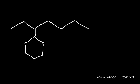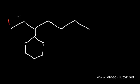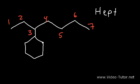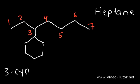Go ahead and name this compound. We need to identify the longest chain — the longest chain is not the ring but the straight chain. The ring has six carbons, but the chain above has seven, so that's going to be the parent name: heptane. The six-carbon ring as a substituent is called cyclohexyl — with a 'yl' suffix. The name for this compound is 3-cyclohexylheptane.